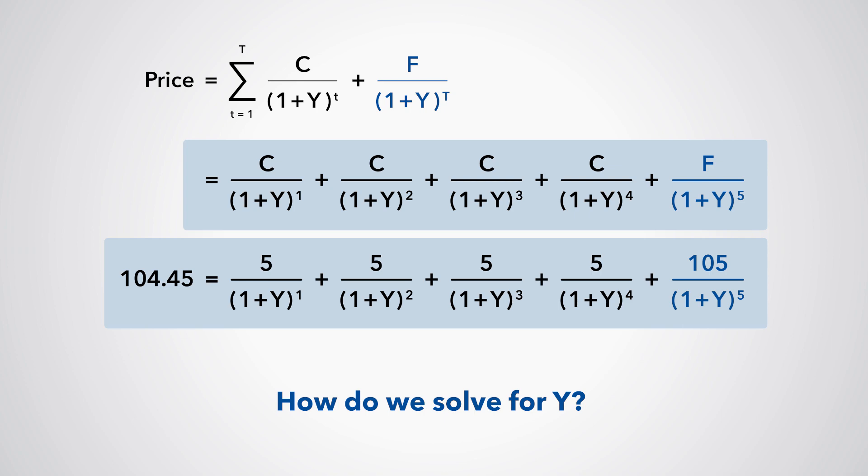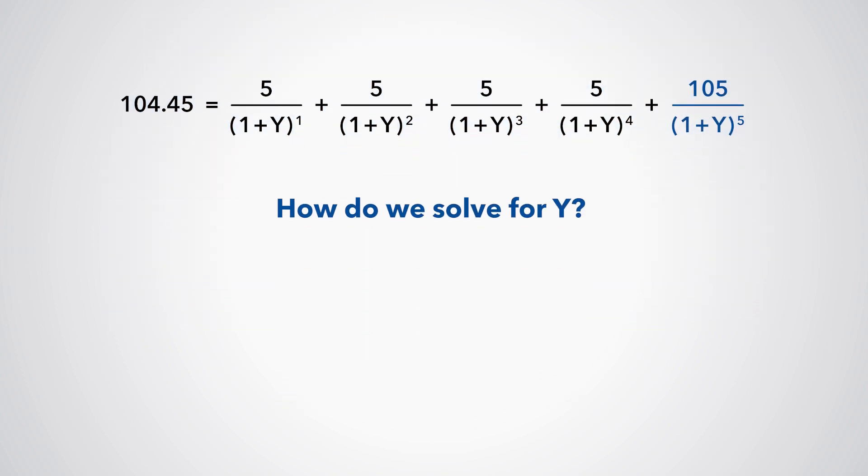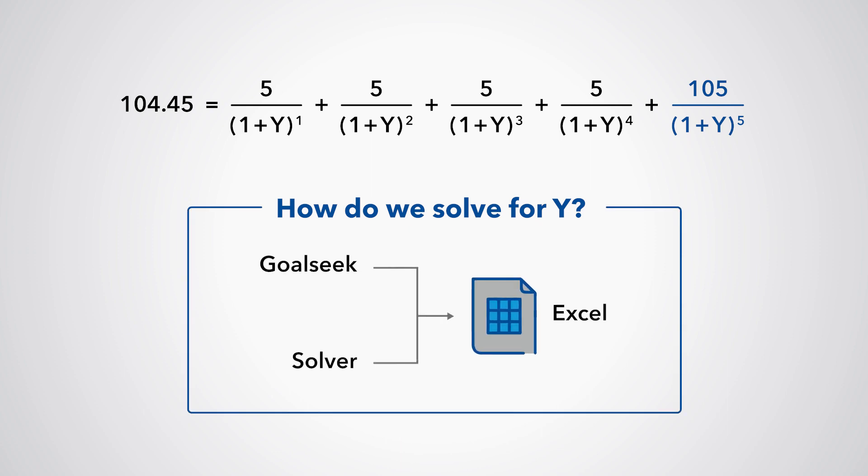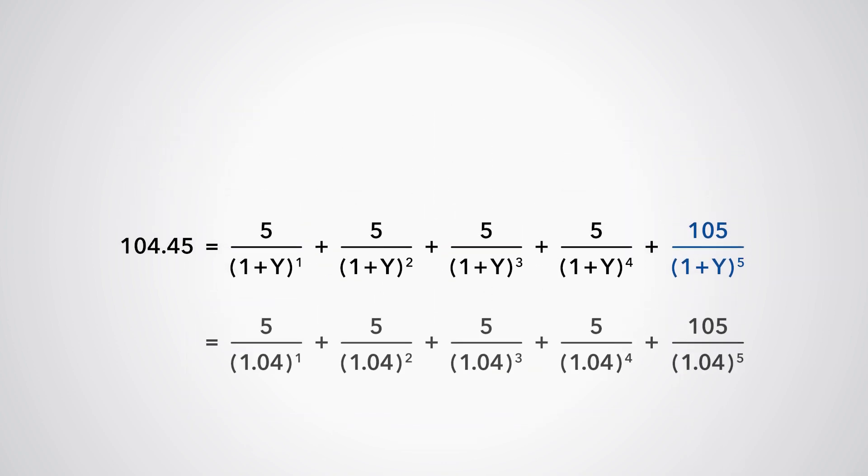We need to use an iterative process of trial and error. The easiest way to do this is to use Goal Seek or Solver in Excel to solve for Y. If we do that, we find that the yield to maturity is approximately 4%.